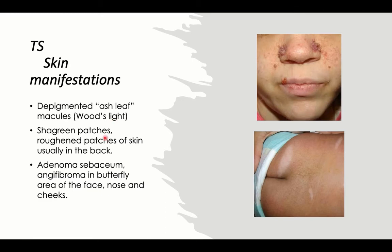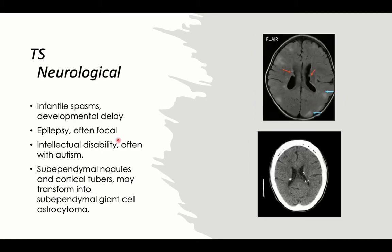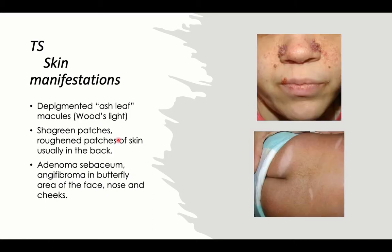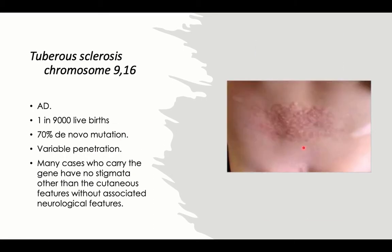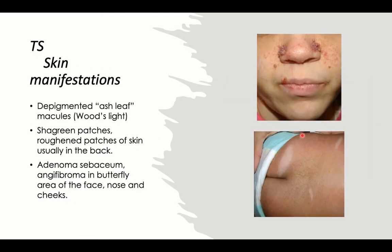The second cutaneous lesion is the shagreen patch — usually one patch of rough skin commonly present on the lumbar area of the back.